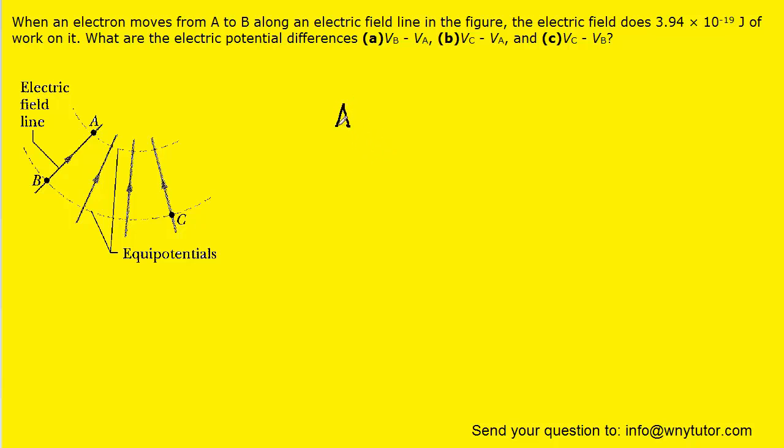We know that a potential difference, or delta V, can be written in terms of electrical potential energy in the following manner. We have the change in electric potential energy divided by the charge.